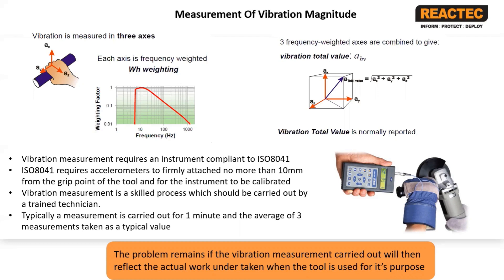The vibration measurement is a skilled process which should only be carried out by a trained technician. It quite commonly can lead to anomalies that a technician will be able to identify. Typically, measurement is carried out for a one-minute period and then an average taken over three measurements to give an expected typical value. It is very important while a measurement is taking place to know all of the conditions so that you can determine if that measurement condition is consistent with the use of the tool for which you want to carry out a risk assessment.